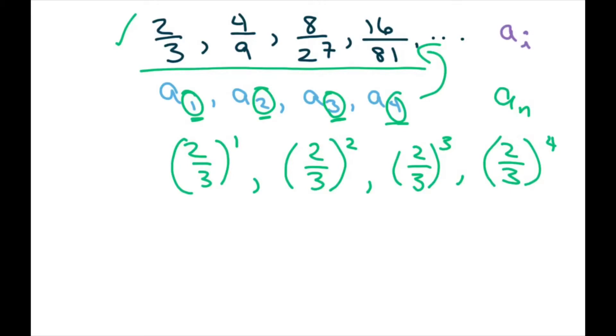Now, when I write down my a sub one, a sub two, a sub three and a sub four, I have matching numbers. The ones match, the twos match, the threes match, and the fours match.